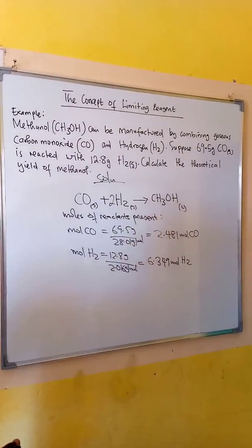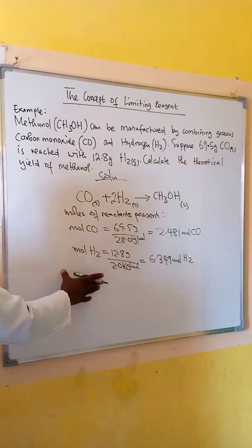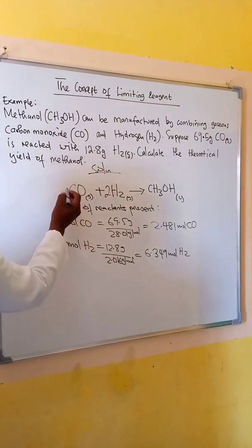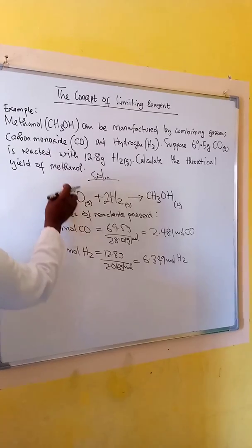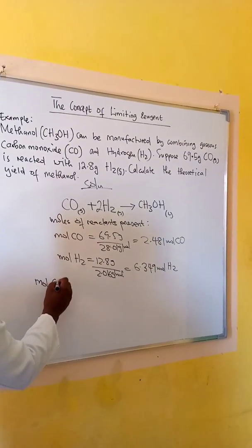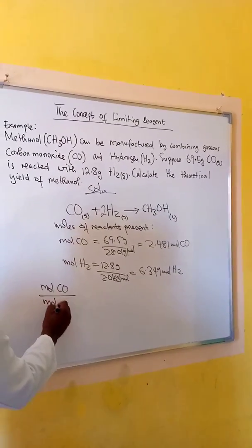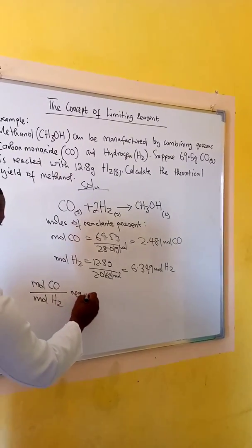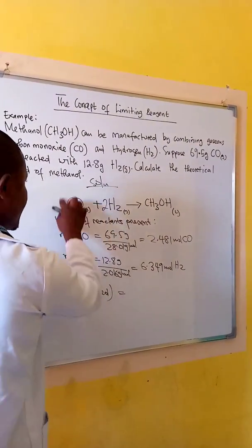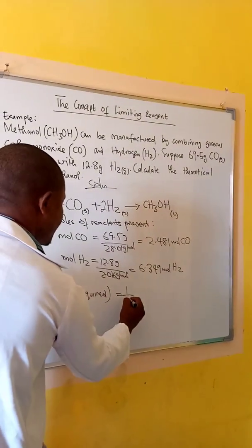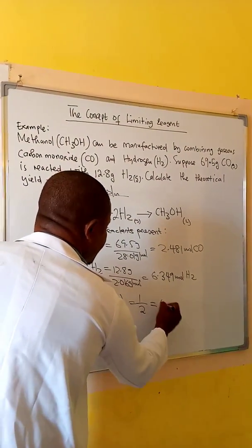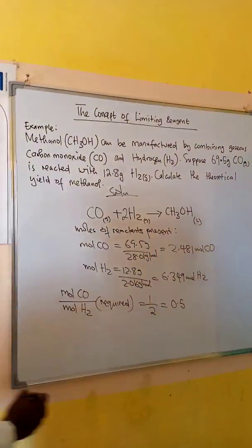These are the moles of the reactants present. Now we find the mole ratio as predicted by the equation. The mole ratio of carbon monoxide to hydrogen is 1 to 2. So moles of carbon monoxide over moles of hydrogen required, as predicted by the balanced equation, equals 1 over 2, which gives us 0.5.